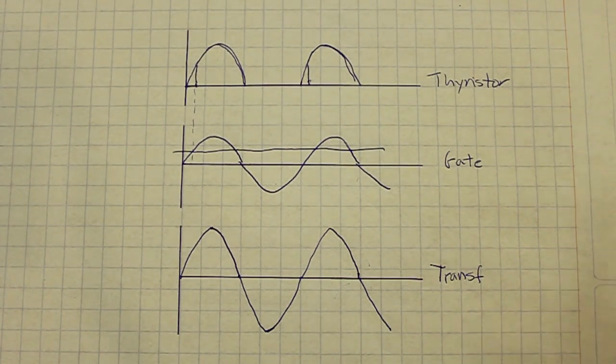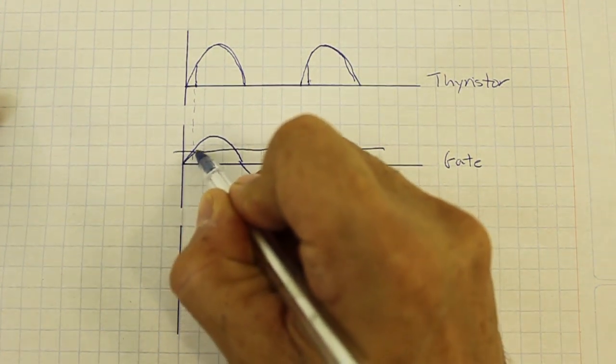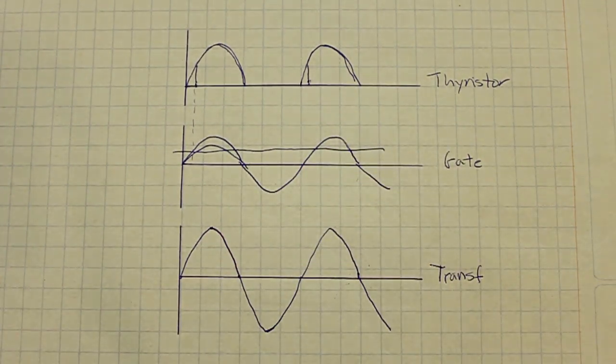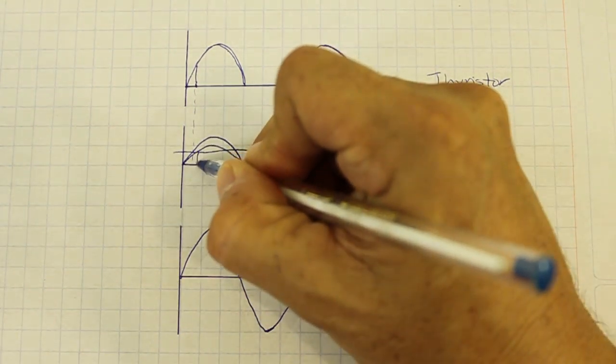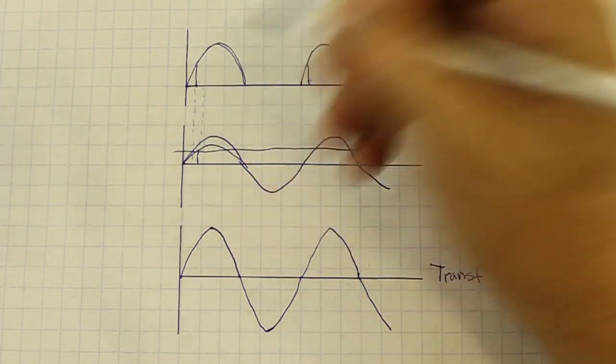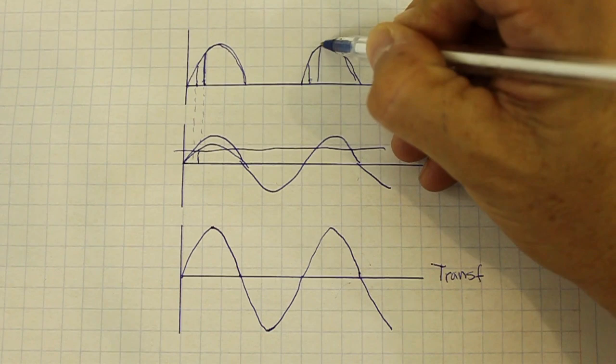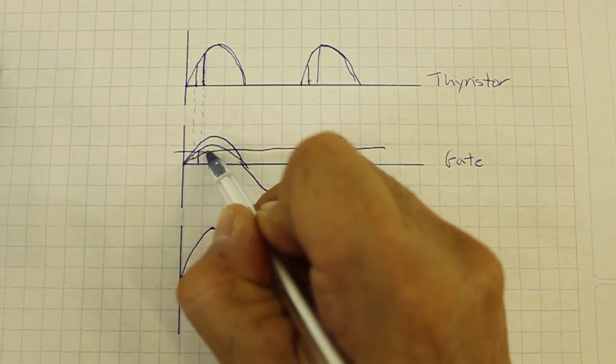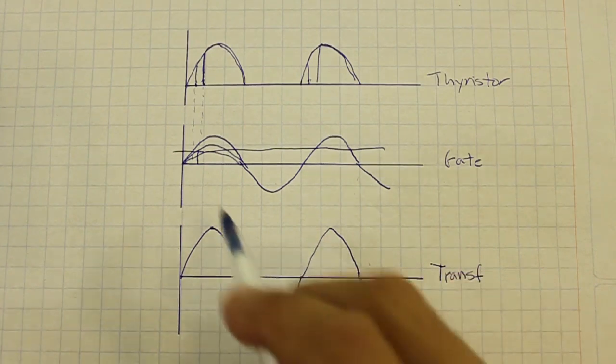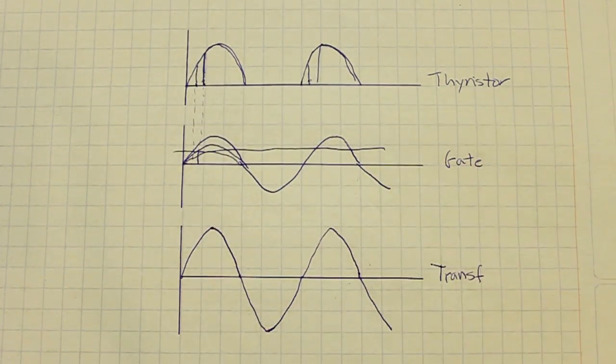And now if we turn our potentiometer and increase the resistance, then this wave will have less amplitude. And notice that the time needed for the gate to have the necessary voltage is now larger. So the thyristor output will now start here. And we can continue to increase the resistance up to the point where the maximum of the voltage gate is equal to the voltage needed to turn on the thyristor, and at that point the thyristor will not fire.